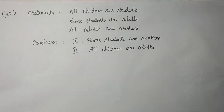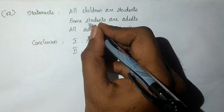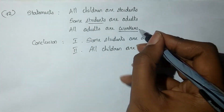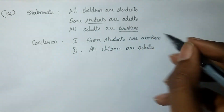Statement: All children are students. Some students are adults. All adults are workers. Conclusion 1: Some students are workers. Conclusion 2: All children are adults. Applying Some plus All — Some students are adults, All adults are workers — gives Some students are workers, so conclusion 1 is correct.